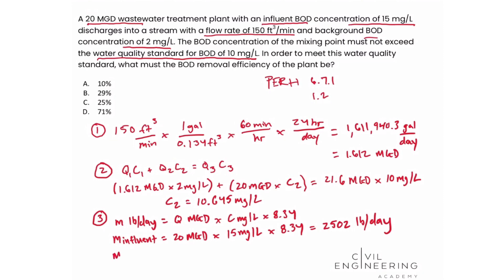We use the same equation to calculate the mass for the effluent BOD. For Q we again use 20 MGD, the treatment plant's capacity, and for C we use 10.645 mg per liter calculated in step 2 — that is the effluent BOD concentration. Multiplying 20 MGD times 10.645 mg per liter times 8.34, we calculate a mass of effluent BOD of 1,775 pounds per day.